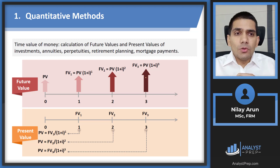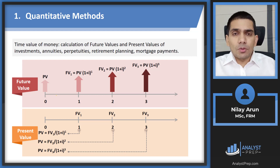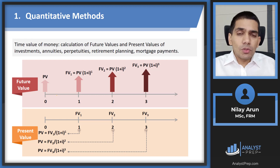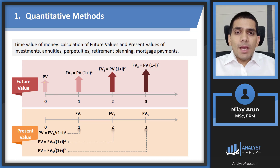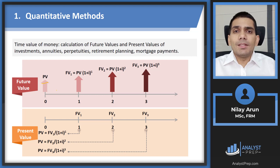We have the concepts of future value and present value. Present value is the amount of money that you need to invest right now. Future value is what this present value will compound to. So if we need $1,000 two years from now, how much should we be investing right now? $1,000 becomes the future value, and the amount we need to invest right now will be the present value. Compounding means going forward in time — going from present value to future value.